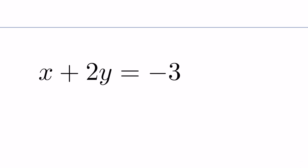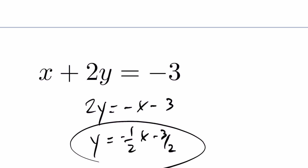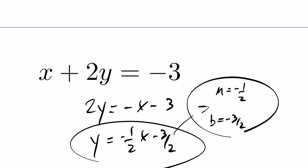In this example, isolating y gives 2y equals negative x minus 3. Dividing across by 2 gives y equals negative 1 half x minus 3 halves. The slope is negative 1 half and the b value is negative 3 halves.